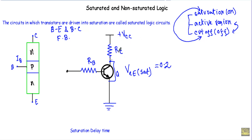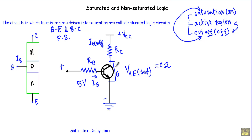Let's say I am supplying the collector terminal with VCC volts through a bias resistor RC. If I apply a sufficient amount of voltage between the base and emitter terminal — greater than 0.7 volts, say 5 volts — all the electrons in the emitter terminal will contribute in current conduction. Therefore I will get a high amount of base current at the base terminal.